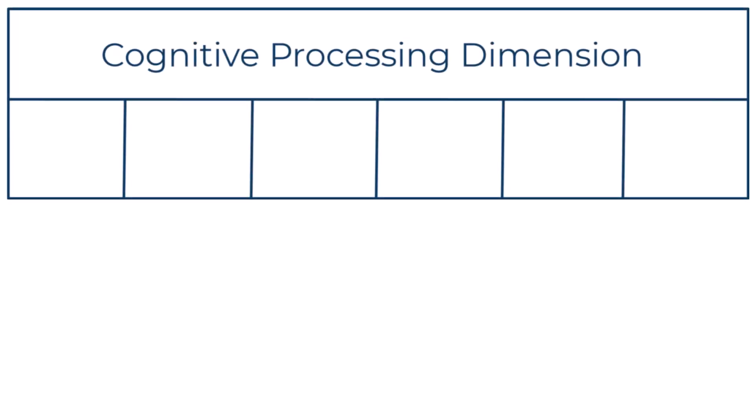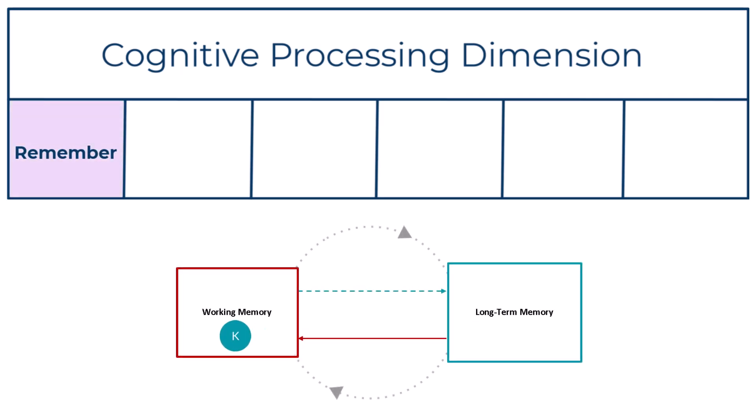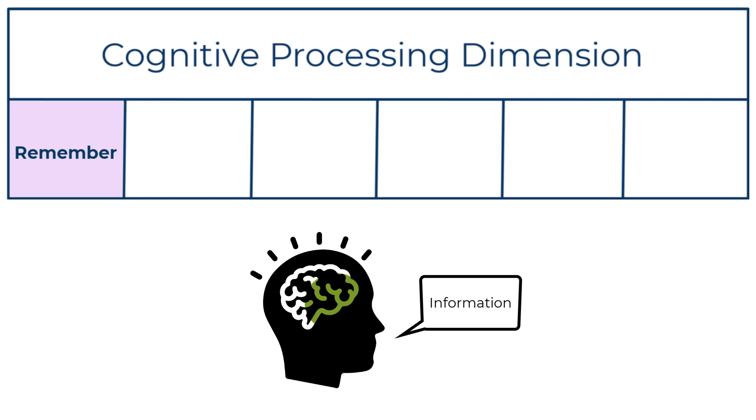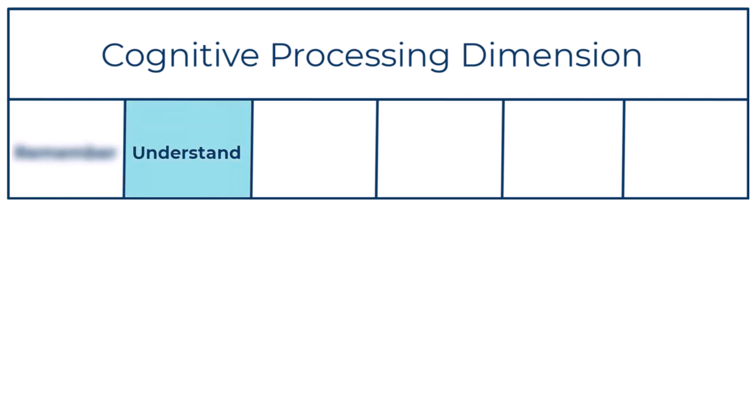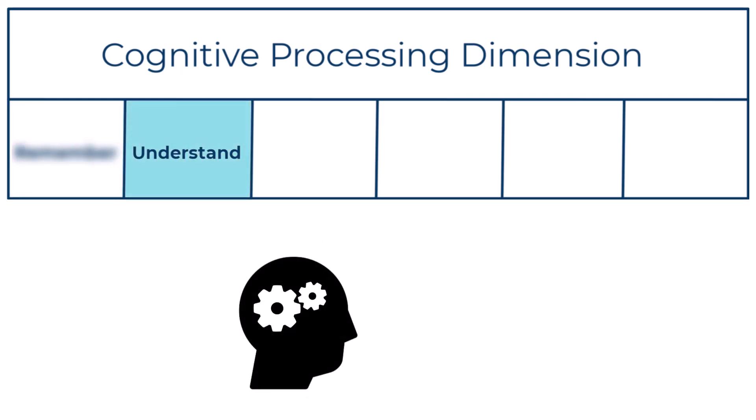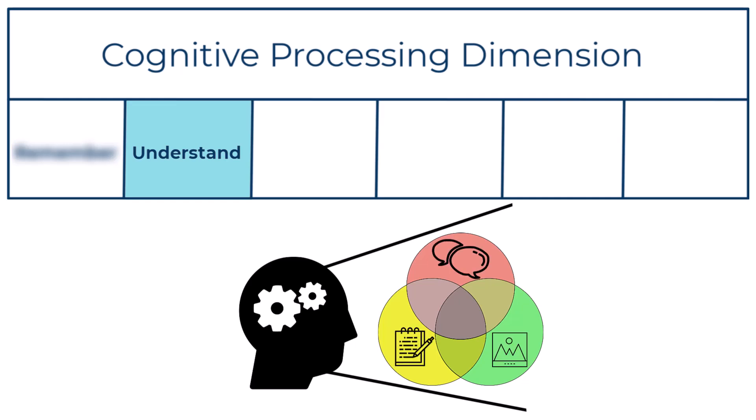For now, we will cover the general description of each level. The first level is remember. This is generally described as retrieving relevant knowledge from long-term memory. The next level of complexity is understand. This involves constructing meaning from instructional messages, including oral, written, and graphic communication.